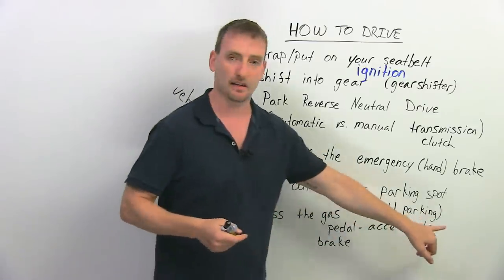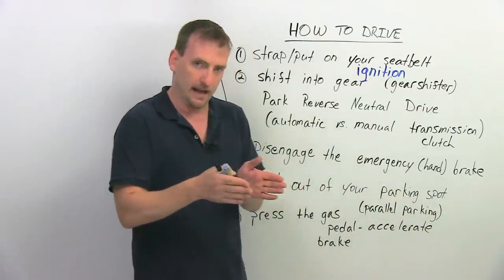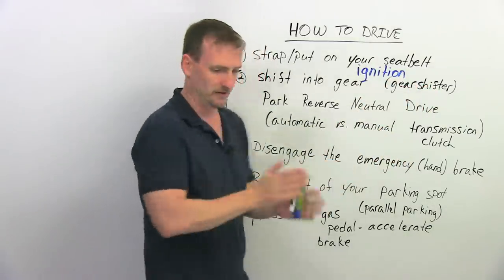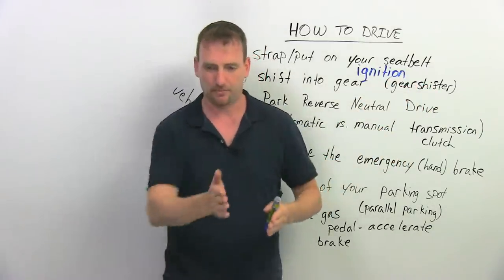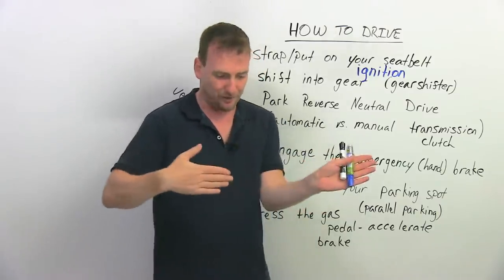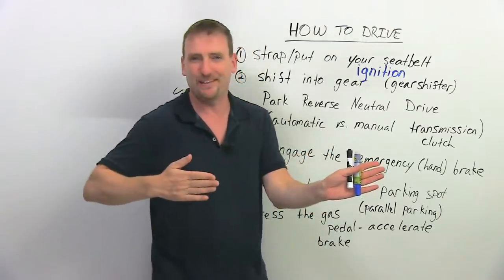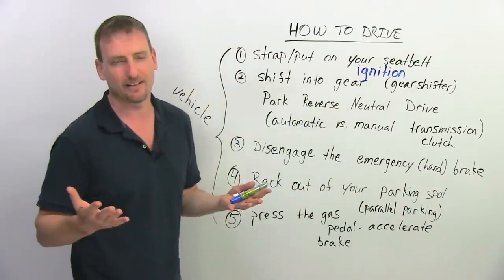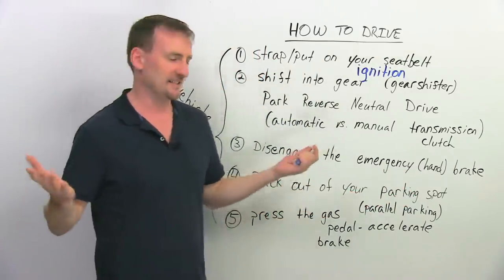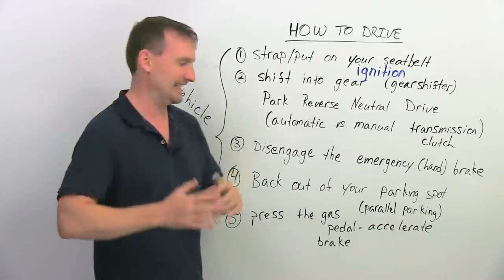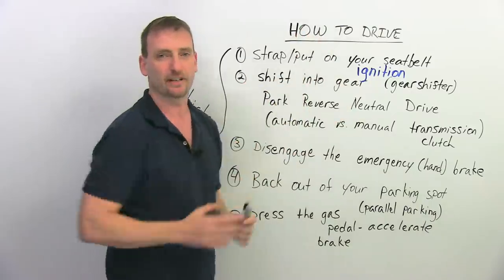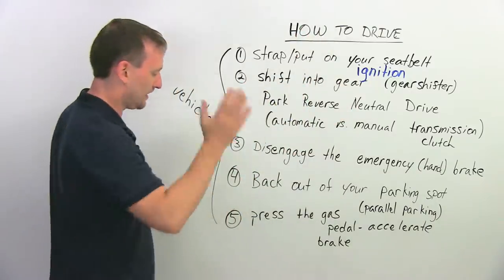You disengage the emergency brake, and then you back out of your parking spot. Now if you parallel parked, then you just back up and go forward out. Parallel park is when you have two cars and you pull in between the cars. Some people avoid parallel parking because they're not good at it. Either way, back out of your parking spot and put it into drive, shift into drive, and drive away.